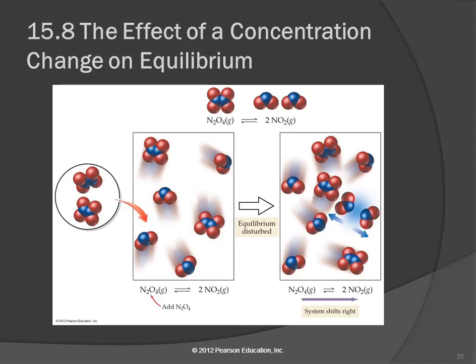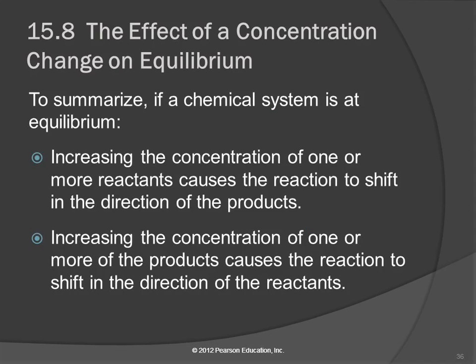So do you get the idea here? If you add something, the reaction will shift to reduce that, to get rid of what you added. It can shift forward, or it can shift back. So if we increase the concentration of one or more reactants, the reaction will shift in the direction of the products. And the opposite, if we increase one of the products, the reaction shifts in the direction of the reactants.